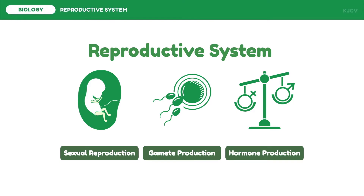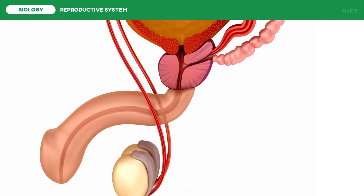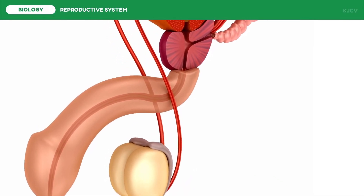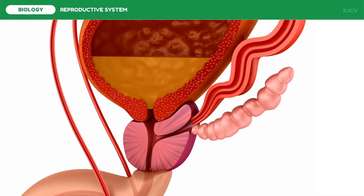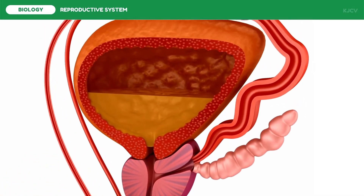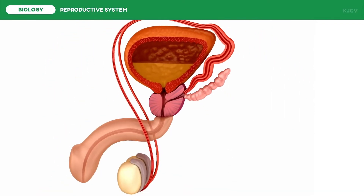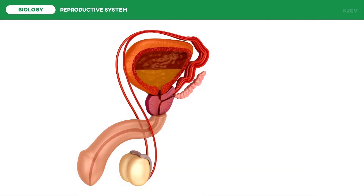The reproductive system for each sex is divided into two: the internal and external reproductive system. The internal reproductive system usually functions for sexual reproduction, while the external reproductive system usually functions for sexual intercourse. However, there are some organs which have overlapping functions.